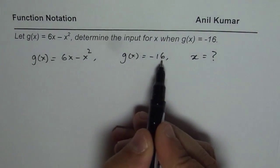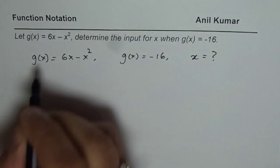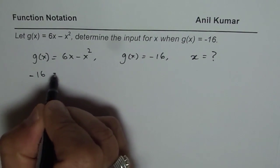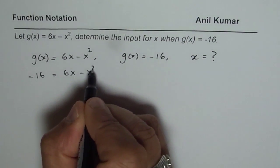Let us substitute what is given. It is minus 16 for g(x). I will write minus 16 equals to 6x minus x squared.